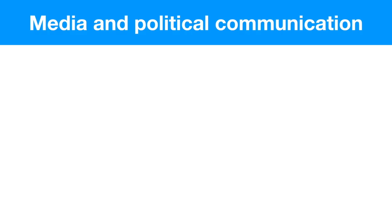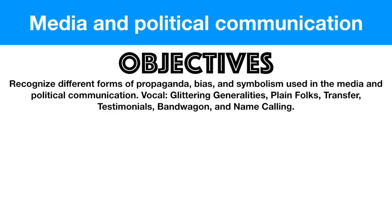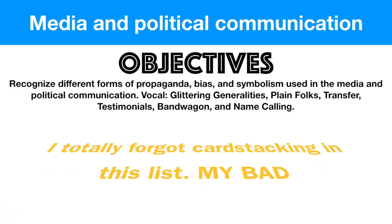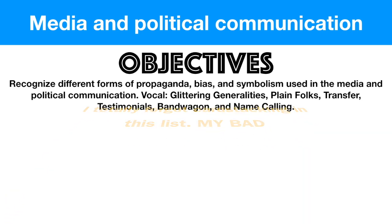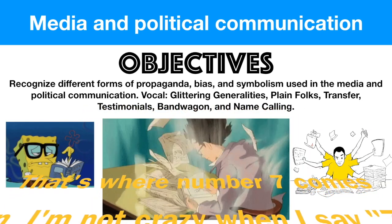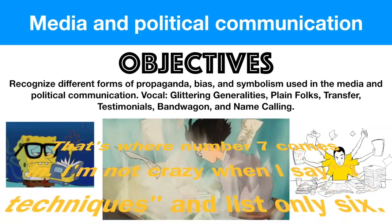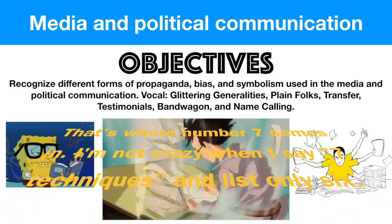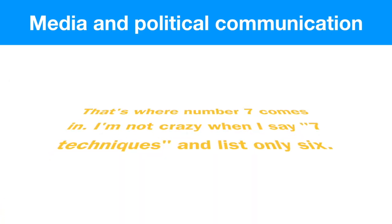Hey guys, and we're back with Civics Review. Today our objectives are looking at media and political communication. At the end of this video, you need to know what the seven different types of propaganda are and how to identify them. They are glittering generalities, plain folks, transfer, bandwagon, testimonials, and name calling.